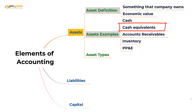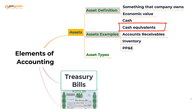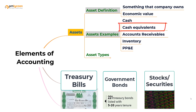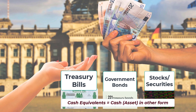We have something called cash equivalents. Cash equivalents are considered assets because they are short-term investments — into treasury bills, government bonds, securities, etc. These are called assets because they can be readily converted into cash whenever there is a need. It is cash, but in another form.